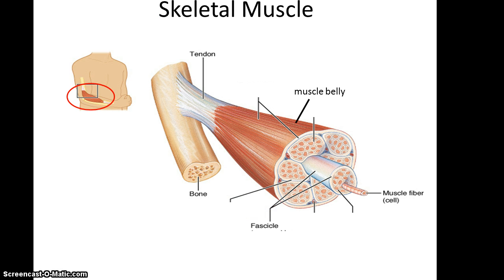Let's focus on the skeletal muscle as an organ. The main parts of a skeletal muscle include the muscle belly, where the bulk of the muscle tissue is located, and the tendon, which attaches the muscle to the bone. When you look down into the muscle belly, it is composed of bundles referred to as fascicles. Within these bundles are muscle cells, which in the world of anatomy are often referred to as muscle fibers, because the cells are so long.